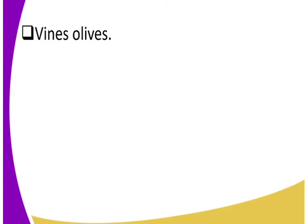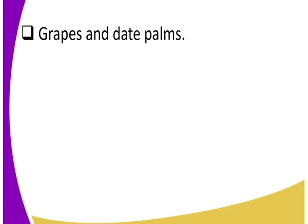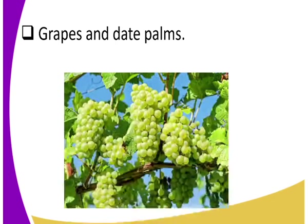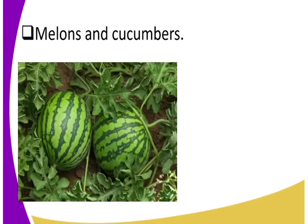We also had vines and olives — olives and vines are among the indigenous crops that we had in Mesopotamia. Not forgetting grapes — they were very nutritious. Dates from date palms were also very nutritious. We also had melons and cucumbers, which are fruits many people are very familiar with.